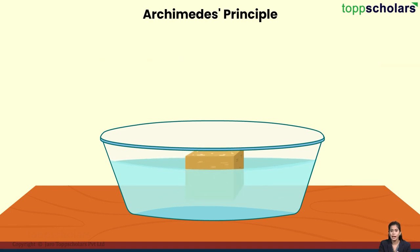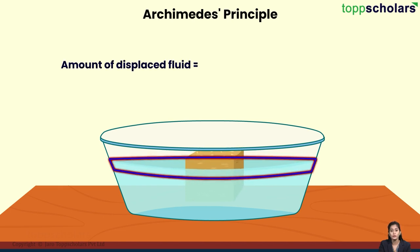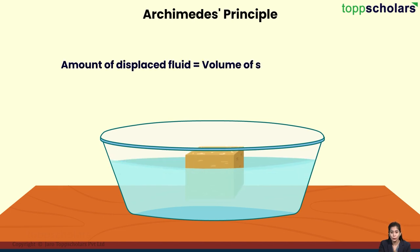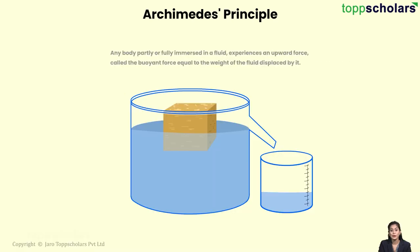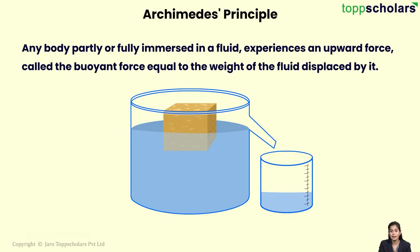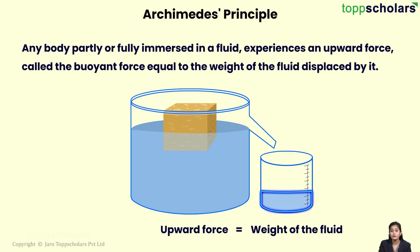Thus, when any object is partially or fully immersed in the fluid, it displaces the amount of the fluid equal to the volume of its submerged portion. Remember Archimedes' principle talks about the weight of the displaced water and not the volume.